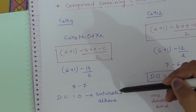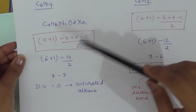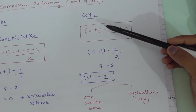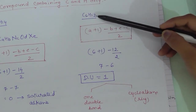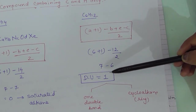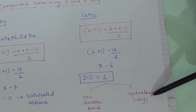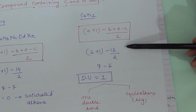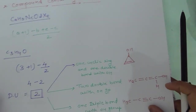For C6H12, applying the formula: 6 + 1 − 12/2 = 7 − 6 = 1. A degree of unsaturation of one means there could be one double bond or one cyclic ring — for example, an alkene or a cycloalkane. So there is either one pi bond or one ring present.